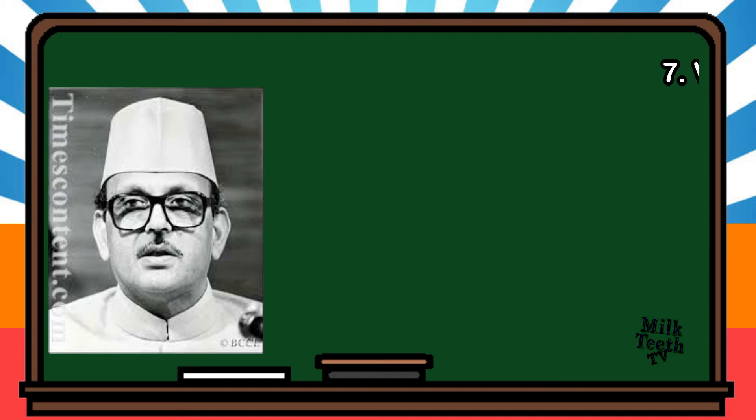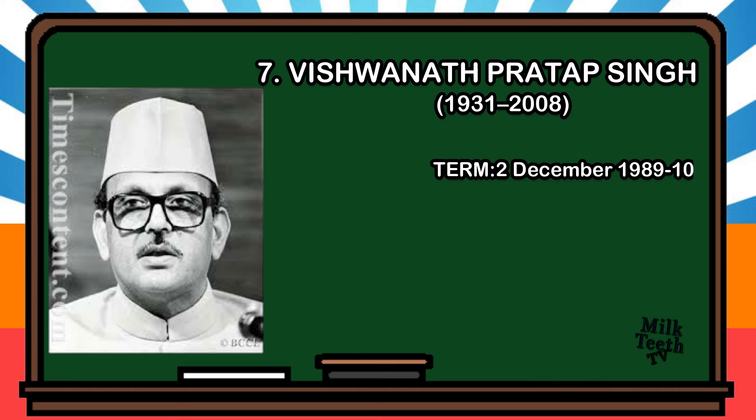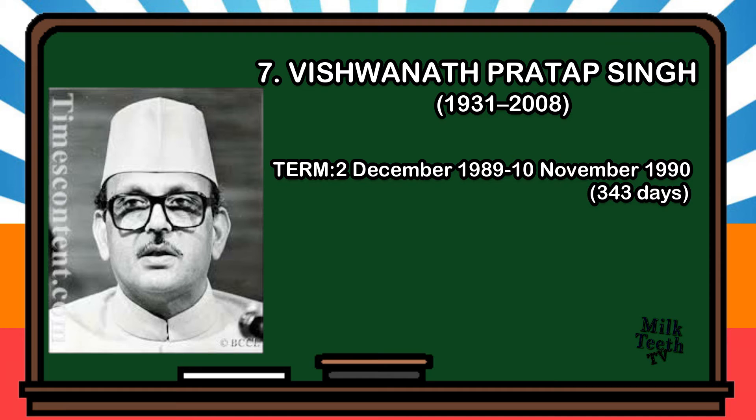The seventh Prime Minister of India was Vishwanath Pratap Singh. He was born in 1931. His term began on 2nd December 1989 and lasted up to 10th November 1990, for a period of 343 days. Party: Janata Dal.